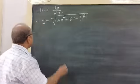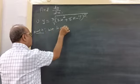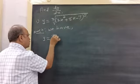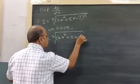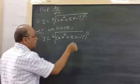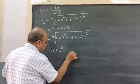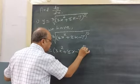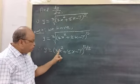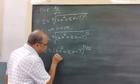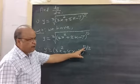First we simplify the function. So the solution is: y is equal to the third root of (3x² + 8x - 7) raised to the power 5. The same function can also be written as (3x² + 8x - 7) raised to the power 5 by 3. We reduce this given function into standard form by putting this complete bracket equal to u, so that this function y becomes u raised to the power 5 by 3.